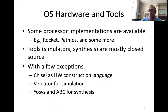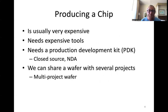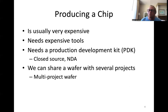But it's getting better. We have some exceptions. We have Chisel as a modern hardware construction language — that's why we're meeting here. We're using Verilator for simulation. We have Yosys for synthesis. Producing a chip is usually super expensive and needs expensive tools. It also needs a PDK — a process development kit — that describes the process of the fab. Each fab has its own PDK and to get it, it's closed source: you need to sign an NDA. We can get a little cheaper by sharing a wafer with several projects, called a multi-project wafer.